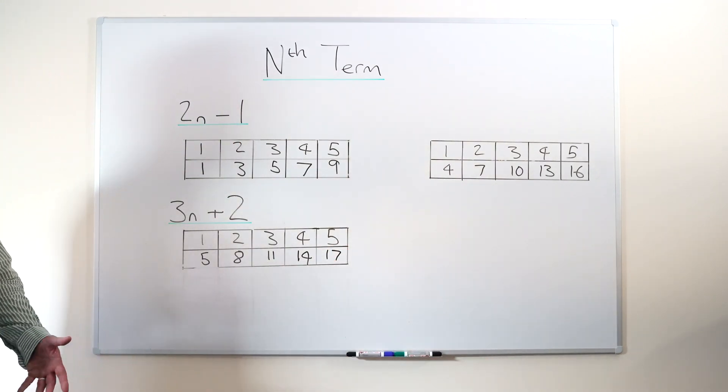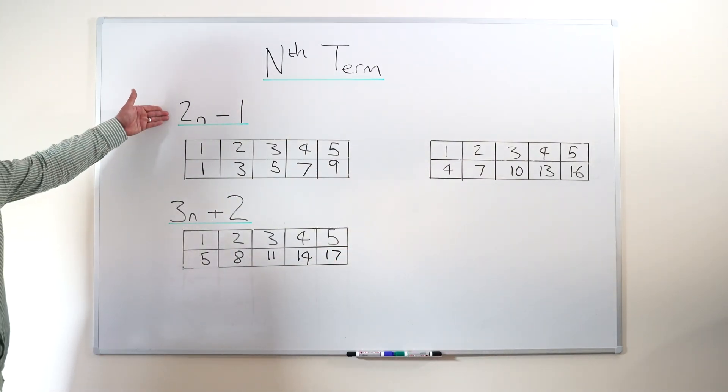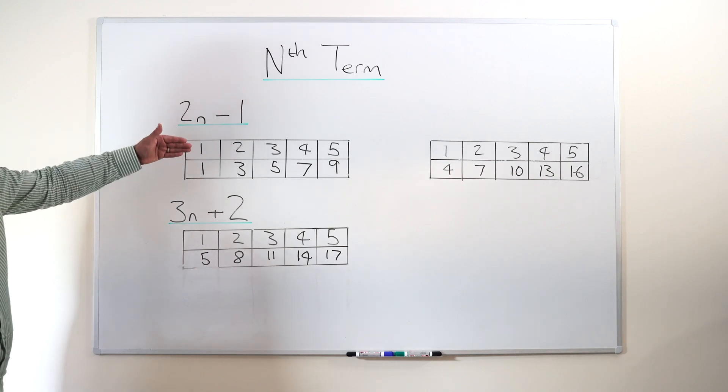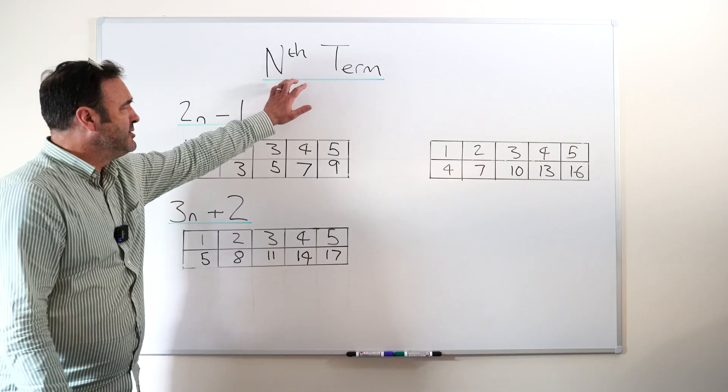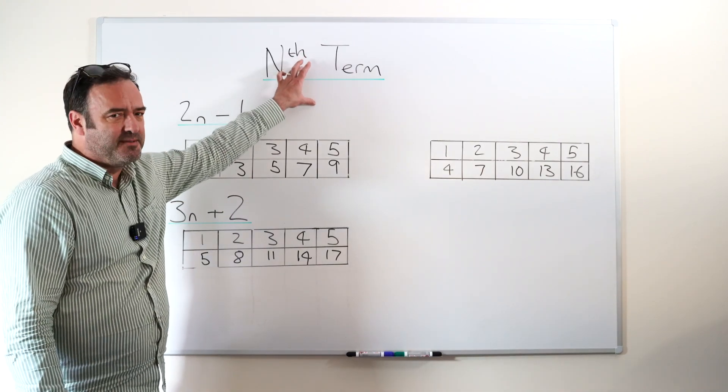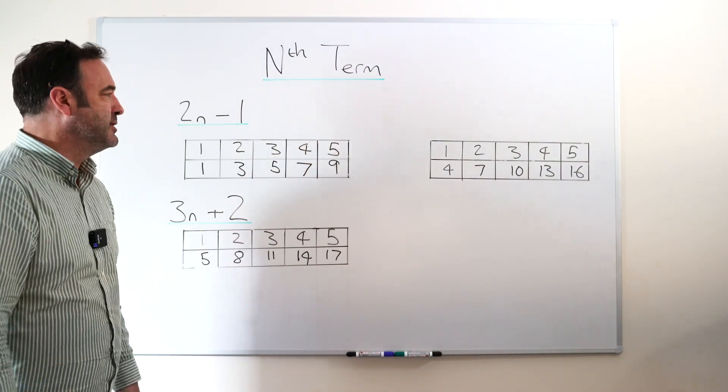So that's nice, isn't it? We get told the rule, we get the sequence, we know that the answer is dependent upon the position in sequence. Remember, not all types of sequence are nth term sequences. It's a special type of sequence.